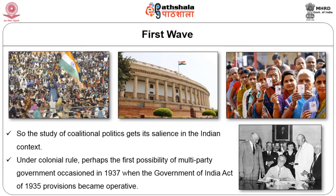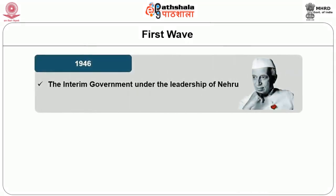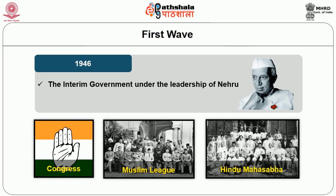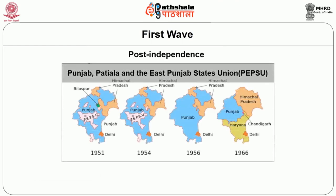We divide the period into different phases. In colonial India, the first coalitional experiment came in 1946 when after elections the interim government under the leadership of Nehru was formed. This coalitional government included not only the Congress but also the Muslim League and the Hindu Mahasabha as constituents of the interim government.